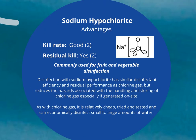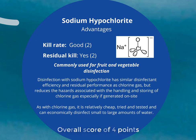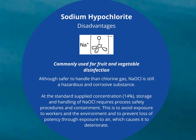The first disinfectant is sodium hypochlorite. The kill rate is good, so we've given it a two, and it also has residual kill, so that's another two points. Disinfection with sodium hypochlorite has similar disinfectant efficiency and residual performance as chlorine gas, but it reduces the hazards associated with handling and storing chlorine gas, especially if it's generated on site. As with chlorine gas, it's relatively cheap, tried and tested, and can economically disinfect small to large amounts of water. Although it's safer to handle than chlorine gas, it still does have a hazardous and corrosive element.